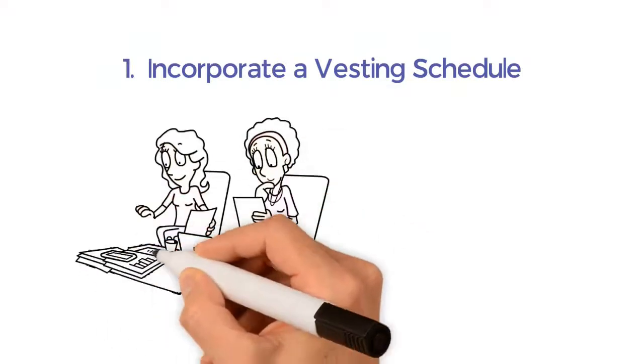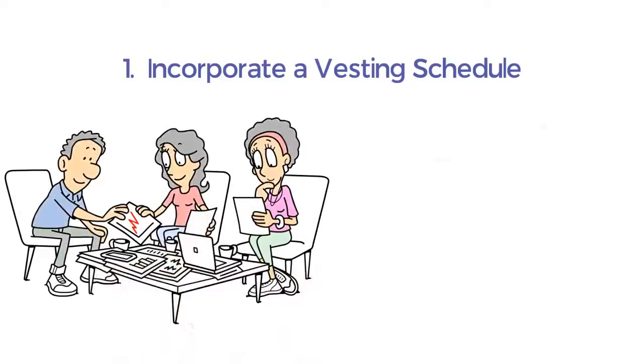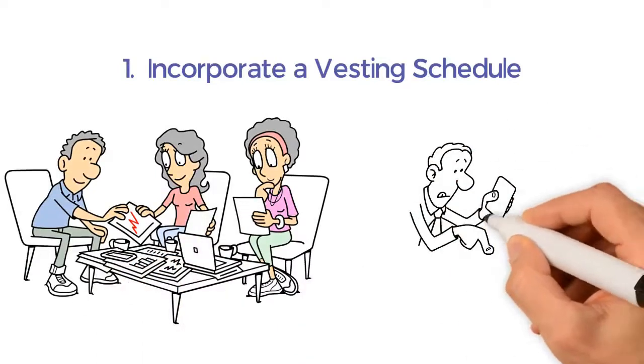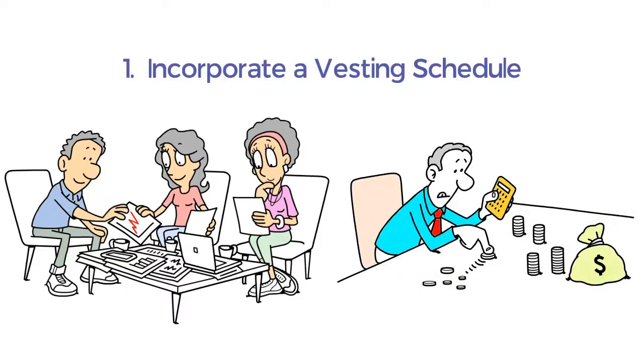If any milestones are not met, the vesting schedule then sets out an objective basis through which the company can request the transfer of certain shares back.